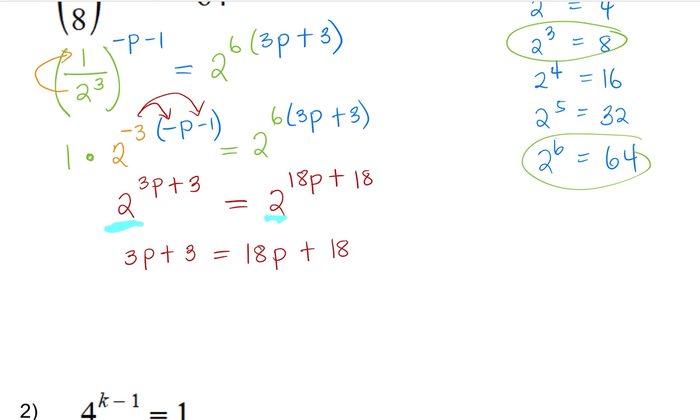Isolating p, that would be subtract 3 on both sides. There's multiple ways to isolate p. I would like to place my p on the left-hand side of the equation. So this will leave me with negative 15p equals 15. And so therefore, the answer for number 1 is p equals negative 1, which is the solution.